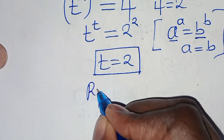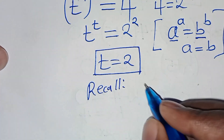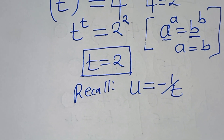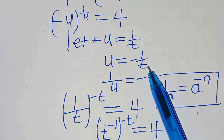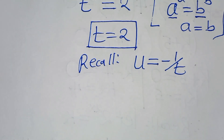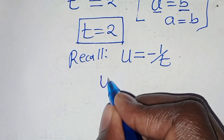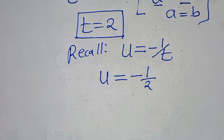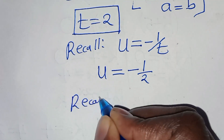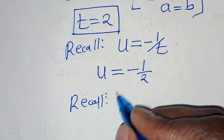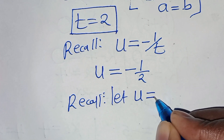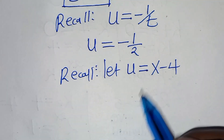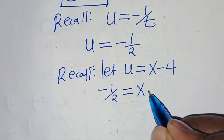Now, if you recall, we have that u is equal to minus 1 over t. Let's substitute the value of t, so that u is equal to minus 1 over 2. And since we let u be equal to x minus 4, we can now solve for x: minus 1 over 2 is equal to x minus 4.